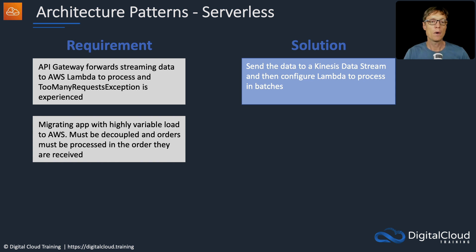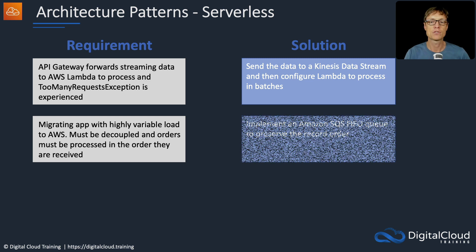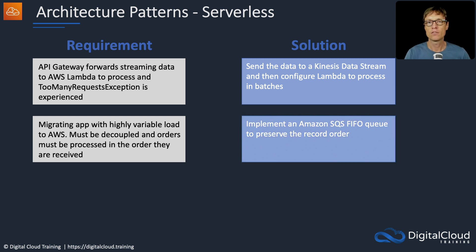You're migrating an app with a highly variable load to AWS — it must be decoupled, and orders must be processed in the order they're received. Simply use an Amazon SQS FIFO queue, which will preserve the record order and is a great way of decoupling.